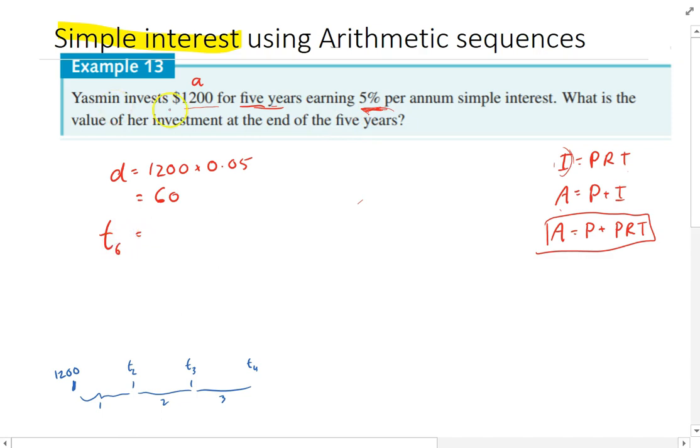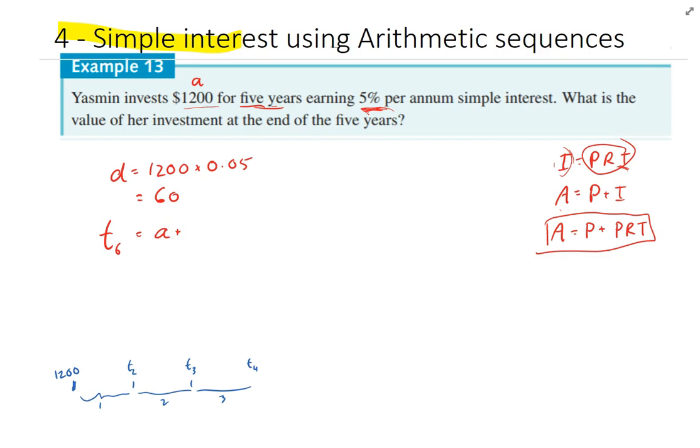So it's one of those questions where you've got to go to the next term than the one you might think. And that's going to be equal to A plus 5D, because again, that's one less than our term. So the A value is our first value, which is 1200, and then five plus our common difference, which is 60. And that's going to be $1,200 plus $300, which is $1,500.